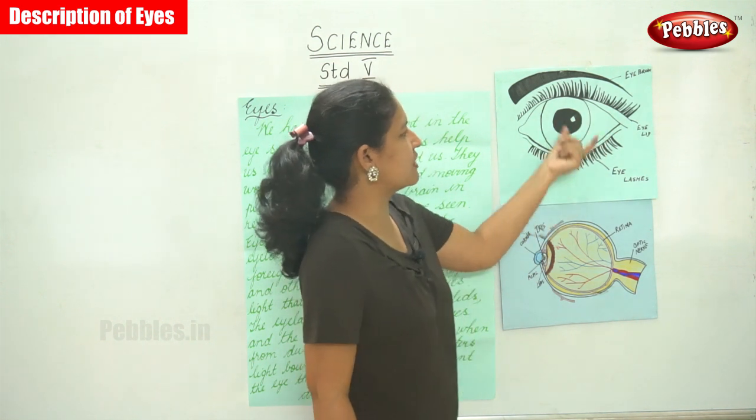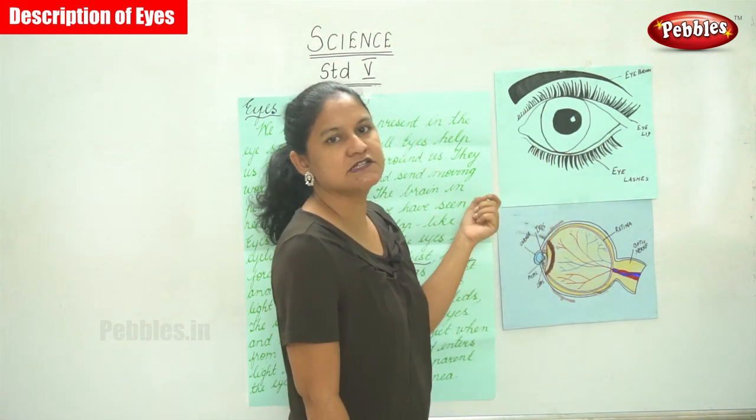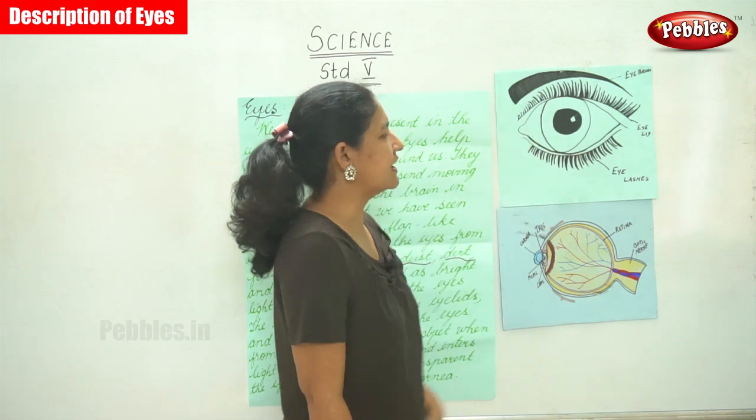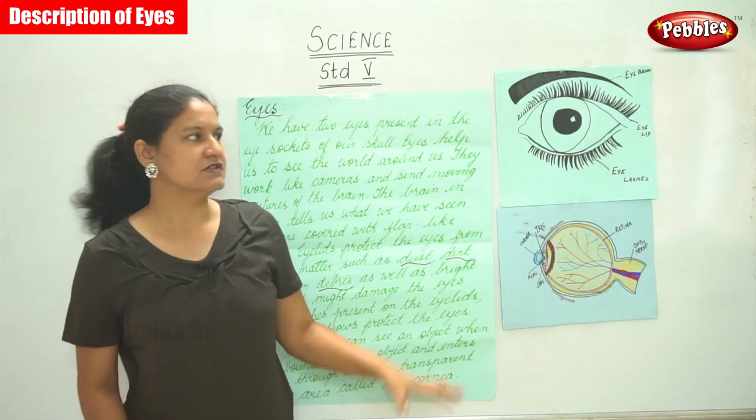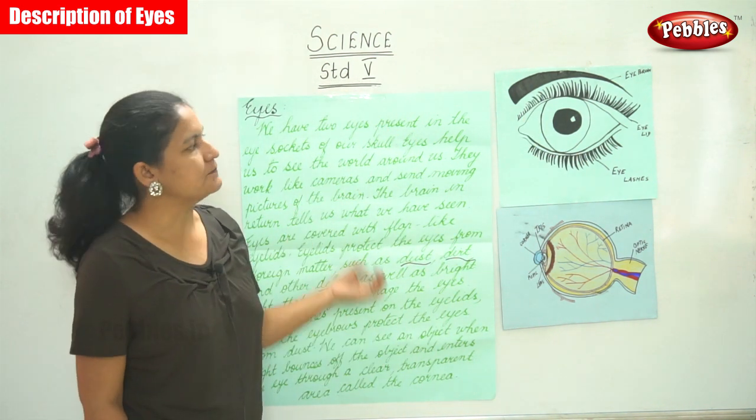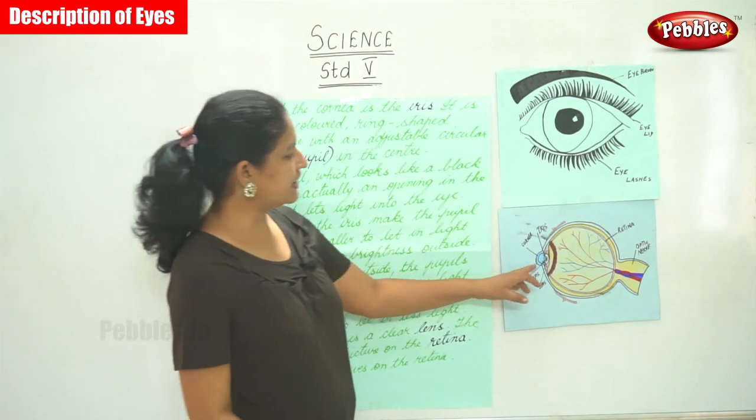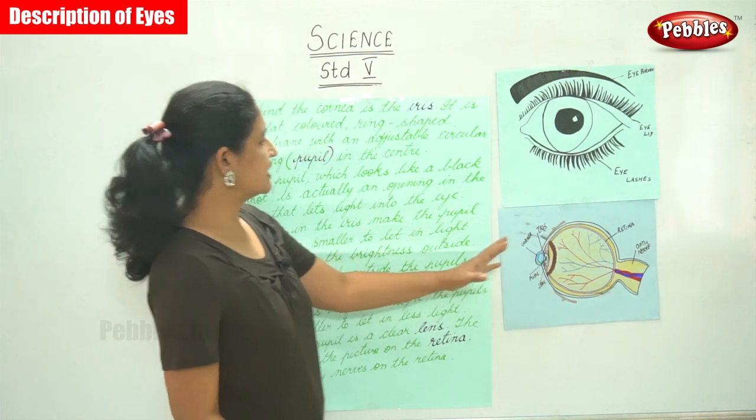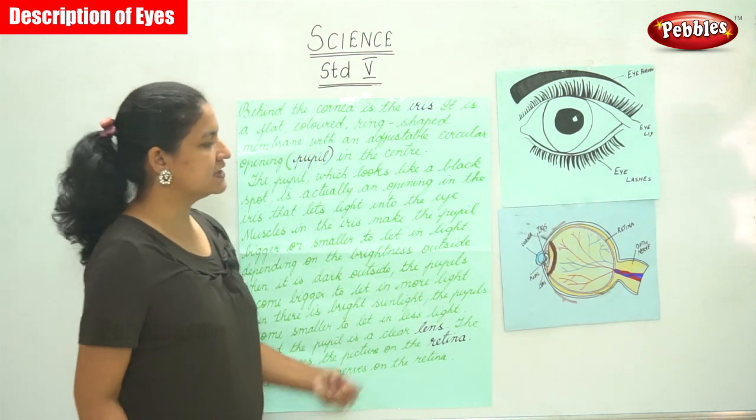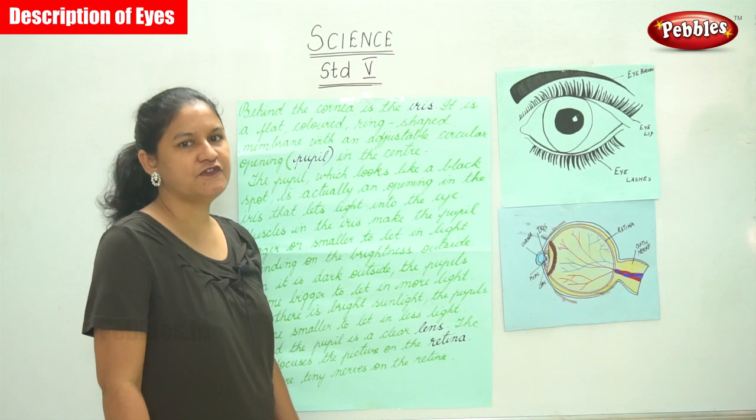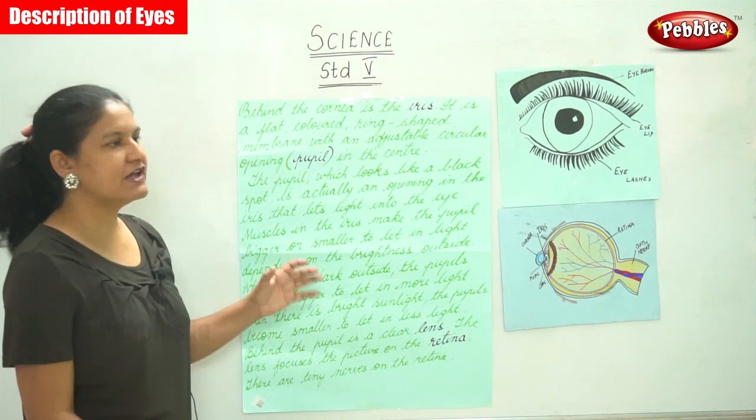Behind the cornea is the iris. The iris is a flat, colored, ring-shaped membrane with an adjustable circular opening.